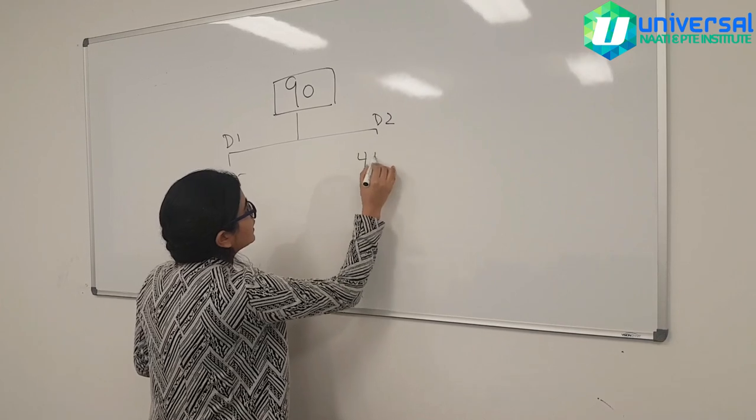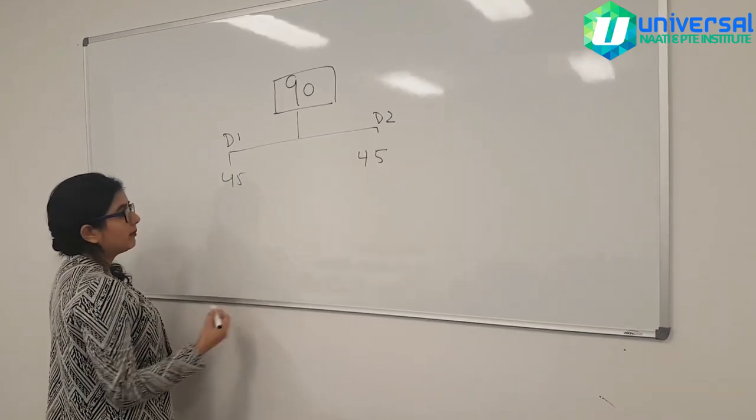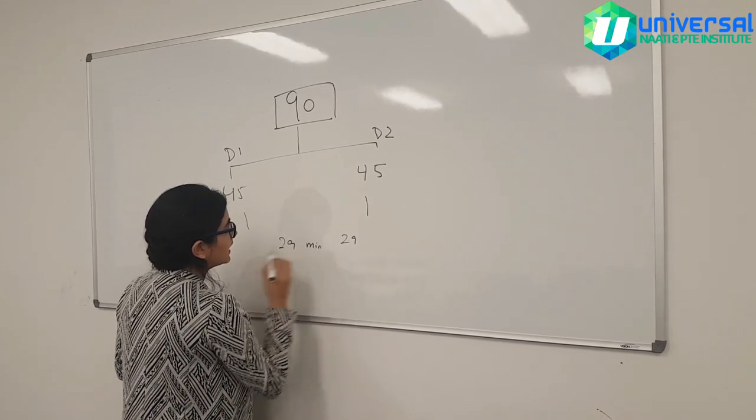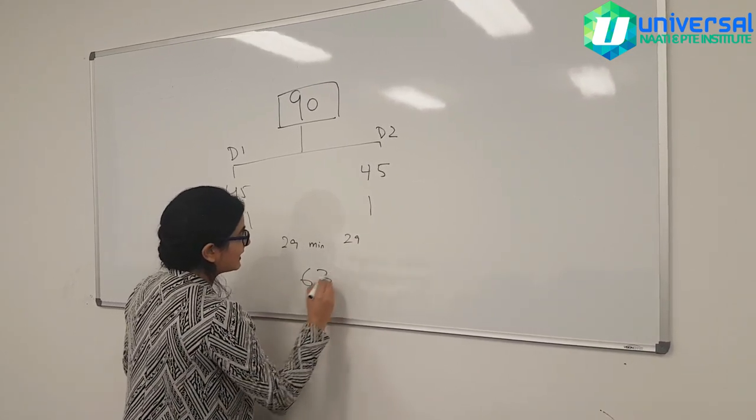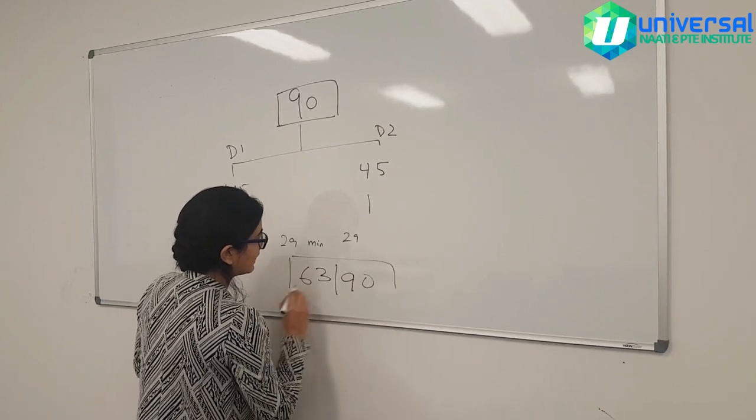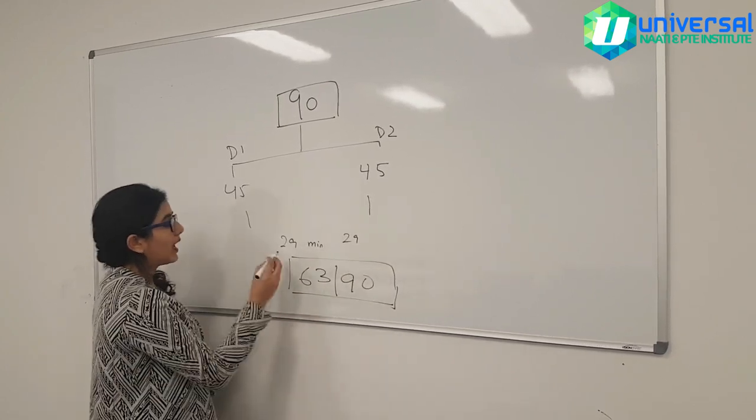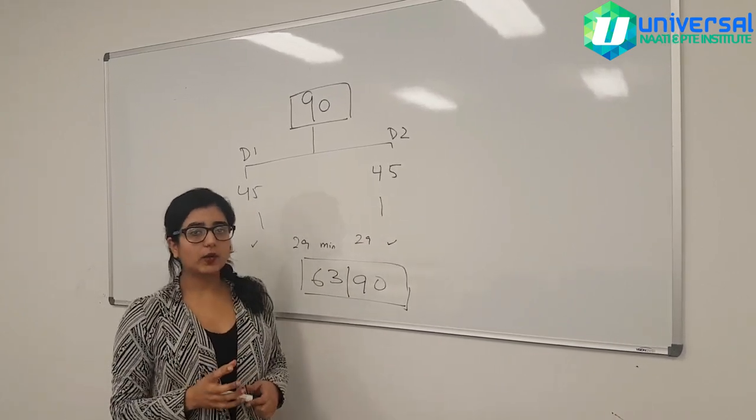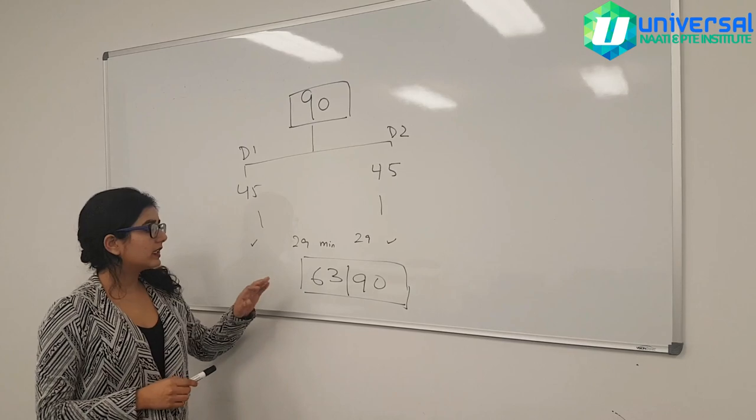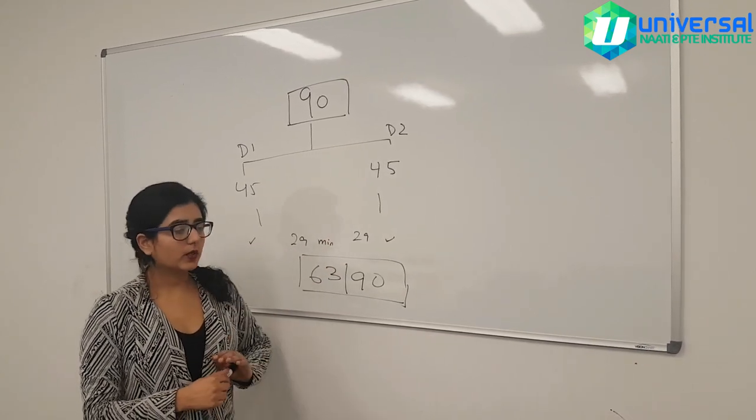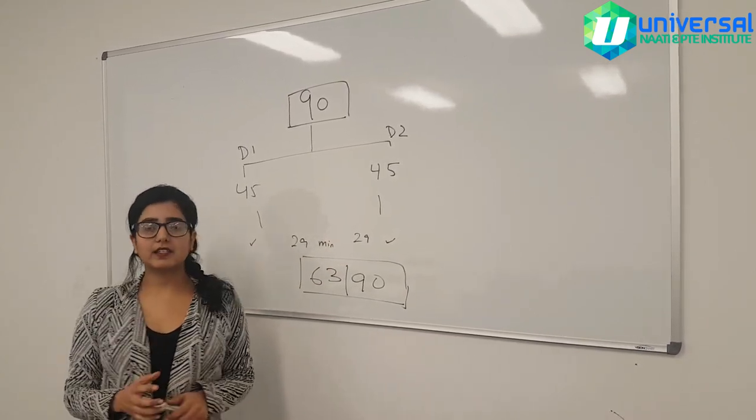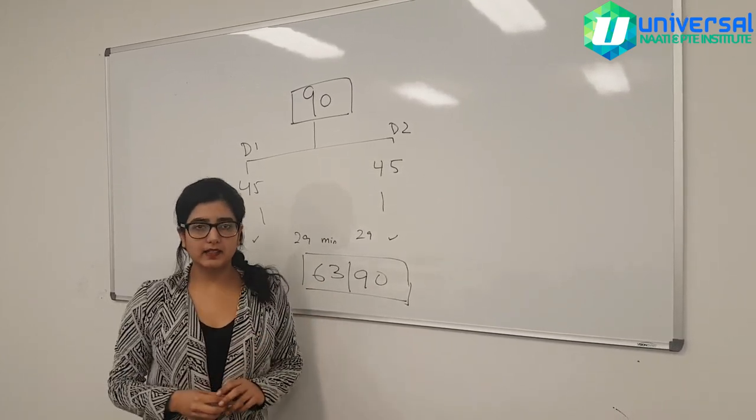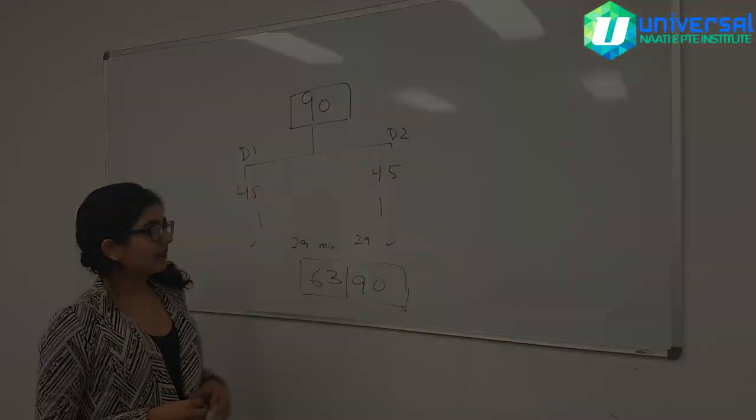To be able to pass the exam you need minimum of 29 out of both of them, and altogether you need 63 out of 90 to pass the total exam. So 29 is a minimum threshold - you need to attain 29 each out of one dialogue and 63 is the total altogether. You're basically aiming at at least 32 to 33 marks in each dialogue to be able to easily pass the exam.